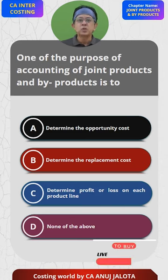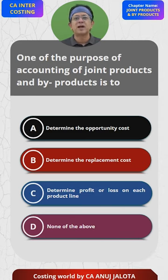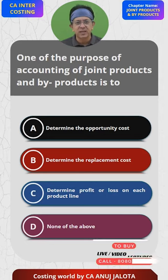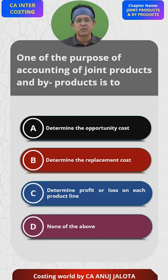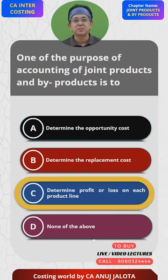The major objective of apportioning your joint cost is to value your closing stock, and the ancillary objective could be option C — that is to find out the profit and loss on each product. So as per the given question, I'll have to accept C as the answer. Yes, that's the correct answer.